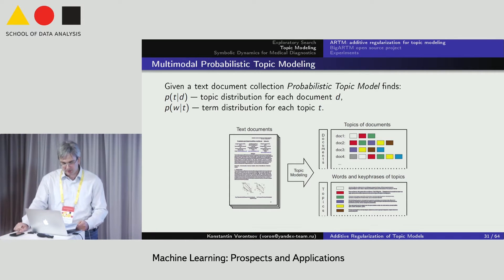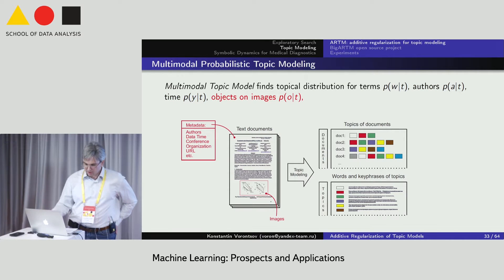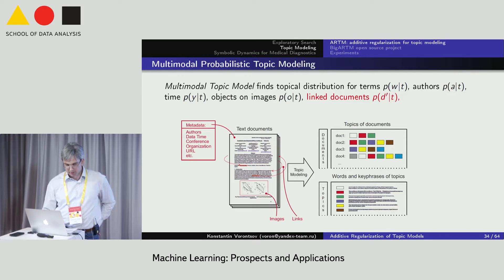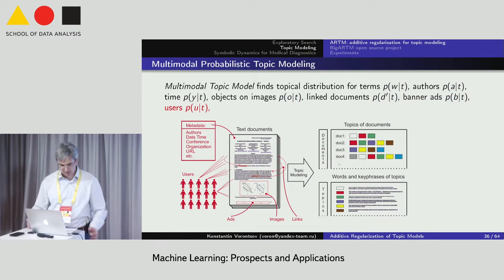But this is not all. The next stage of generalization is to learn multi-modal probabilistic topic models. In real collections, documents usually have metadata including authors, affiliations, time, images and objects on images, citation and links on other documents, advertising banners attached to the web pages, users that read, download, comment, like, dislike documents and so on.